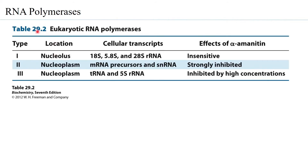Looking at the three types of RNA polymerases — 1, 2, and 3 — RNA polymerase 1 is primarily associated with the nucleolus in the nucleus and is responsible for synthesizing ribosomal RNAs. An interesting study is that alpha-amanitin, obtained from mushrooms, is able to inhibit the functioning of RNA polymerases, but RNA polymerase 1 is not affected by alpha-amanitin at all.